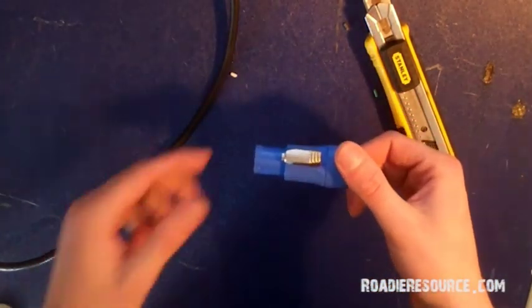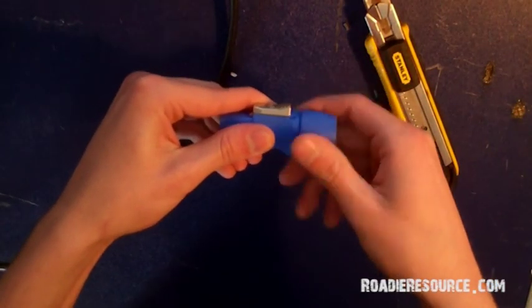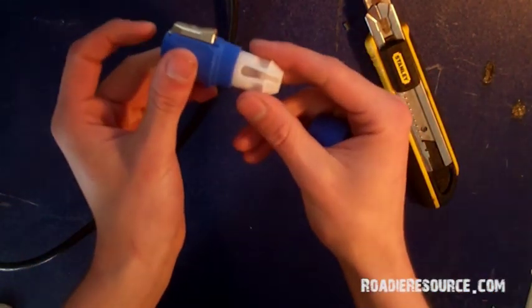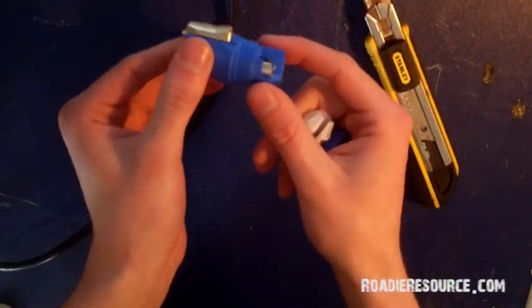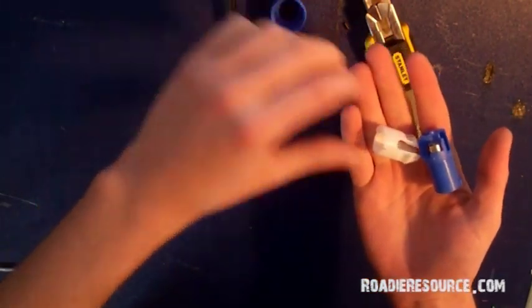First, let's take apart our connector and have a look at it. We can do that by twisting off the boot and we can pop out the clamp and the insert, and there we have the barrel. There's our four parts.